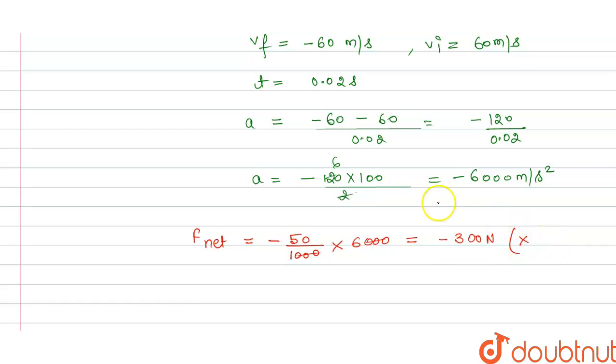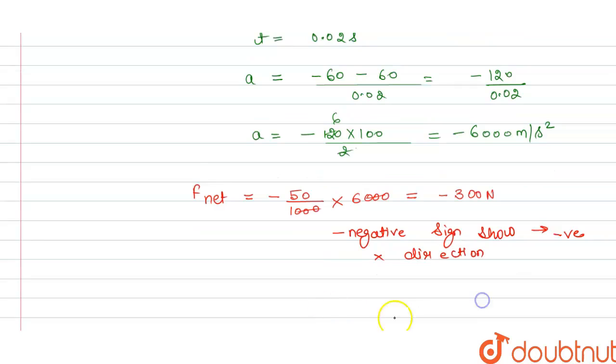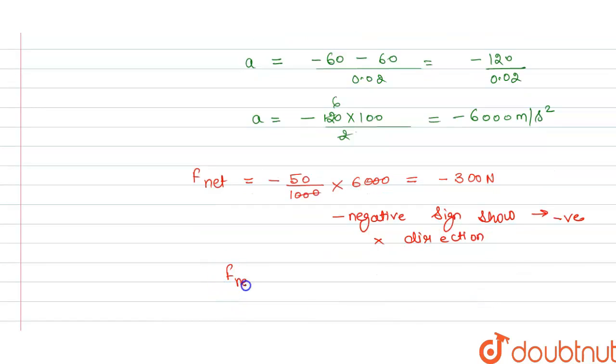This is in negative sign shows that here we can write negative sign. It is in the negative sign, it is in the negative x direction. We can write here F net, that is force net, is equal to 300 Newton in the negative x direction.